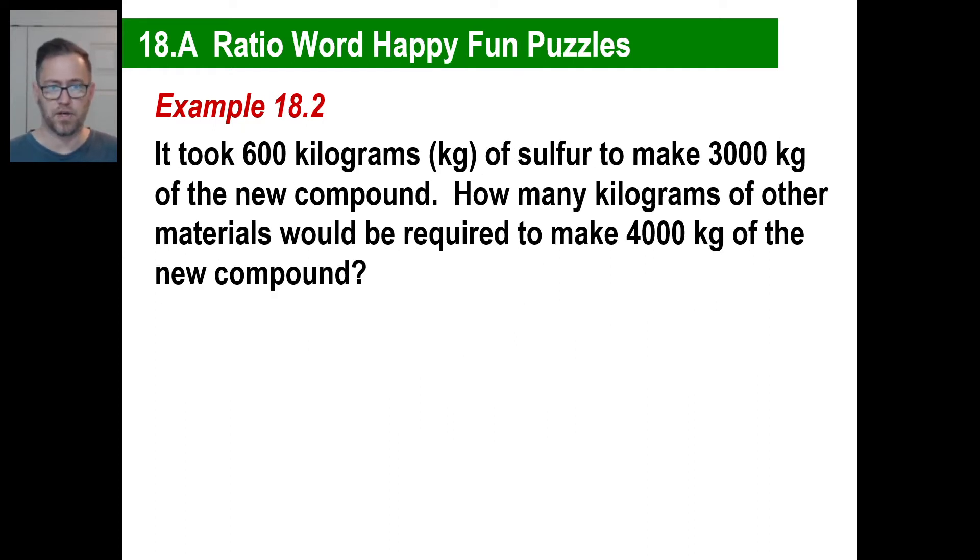It took 600 kilograms of sulfur to make 3,000 kilograms of a new compound. How many kilograms of other materials would be required to make 4,000 kilograms of the new compound? Okay. Well, in other words, it took 600 sulfur to make 3,000. Okay. So in other words, 600, that's sulfur. And then to make 3,000. They're not asking though about sulfur. They're asking other materials.